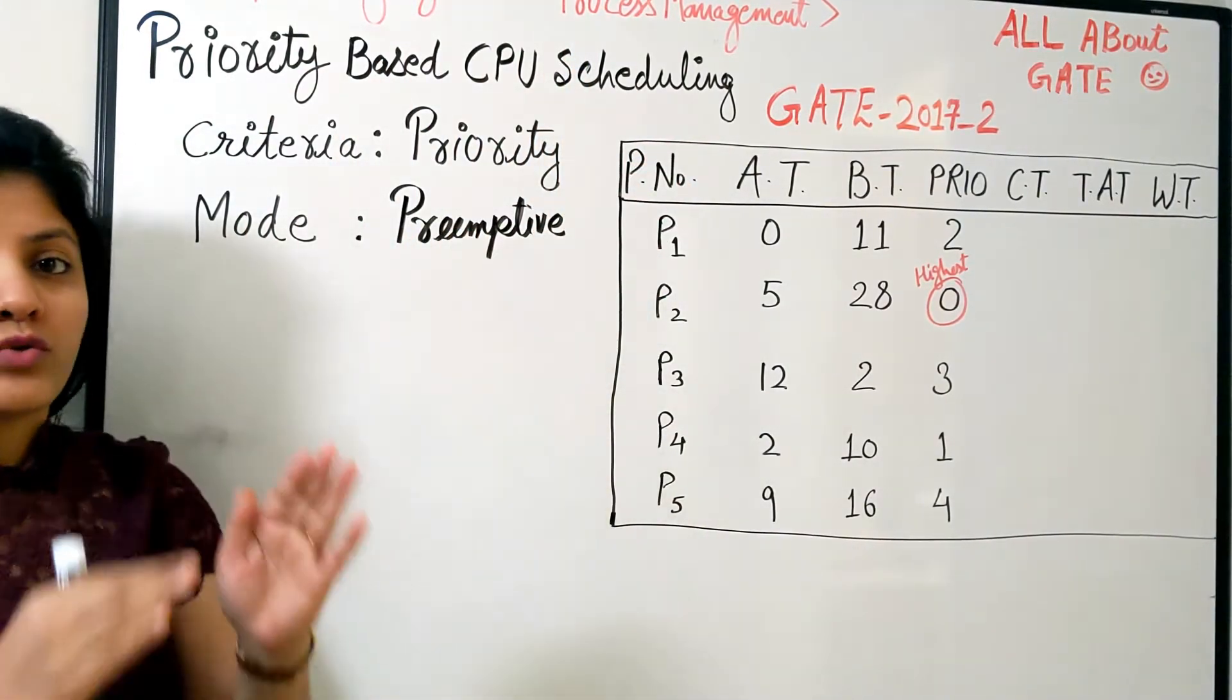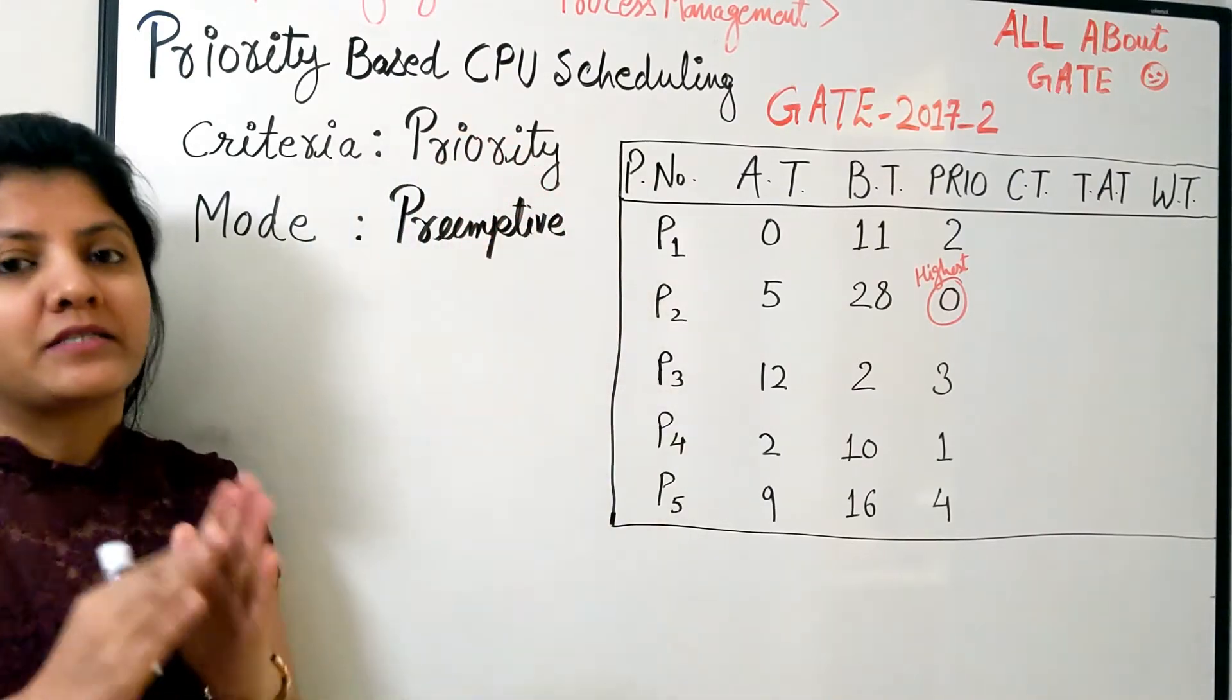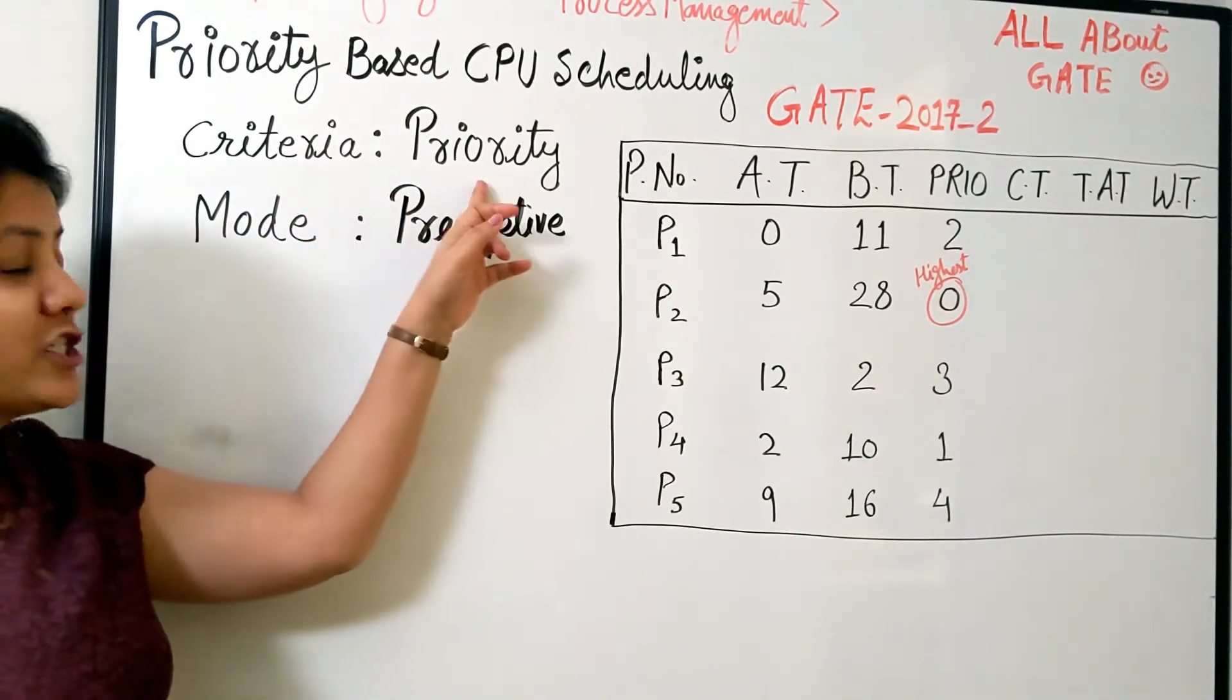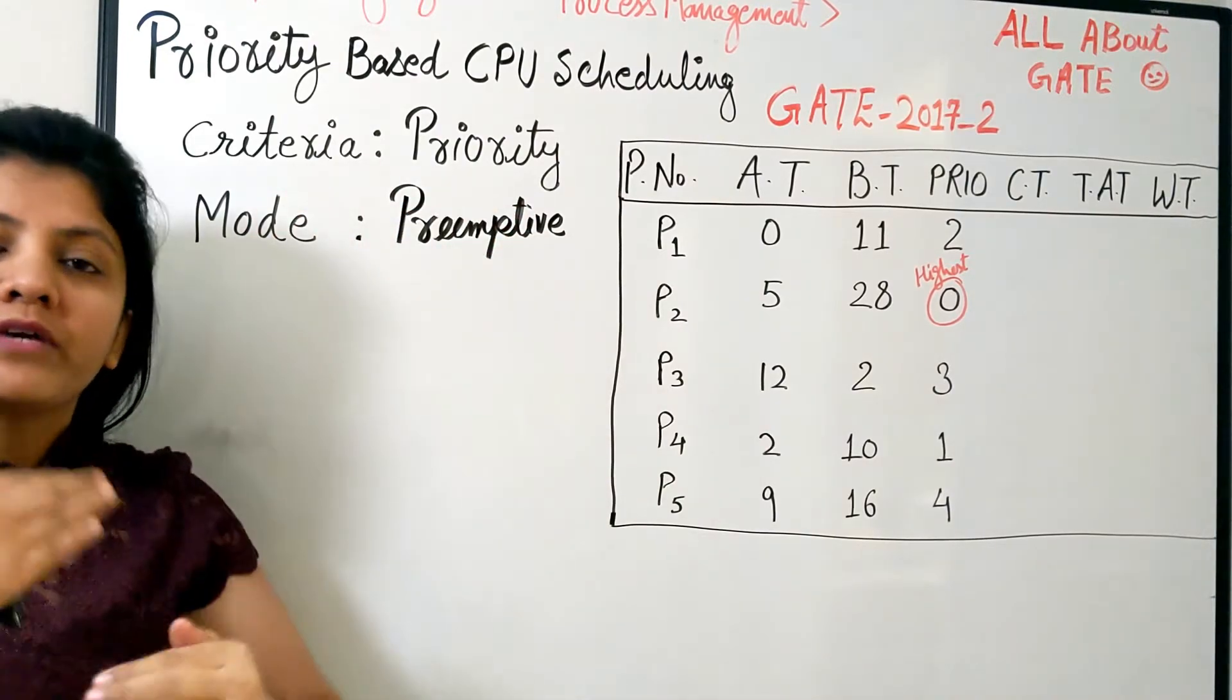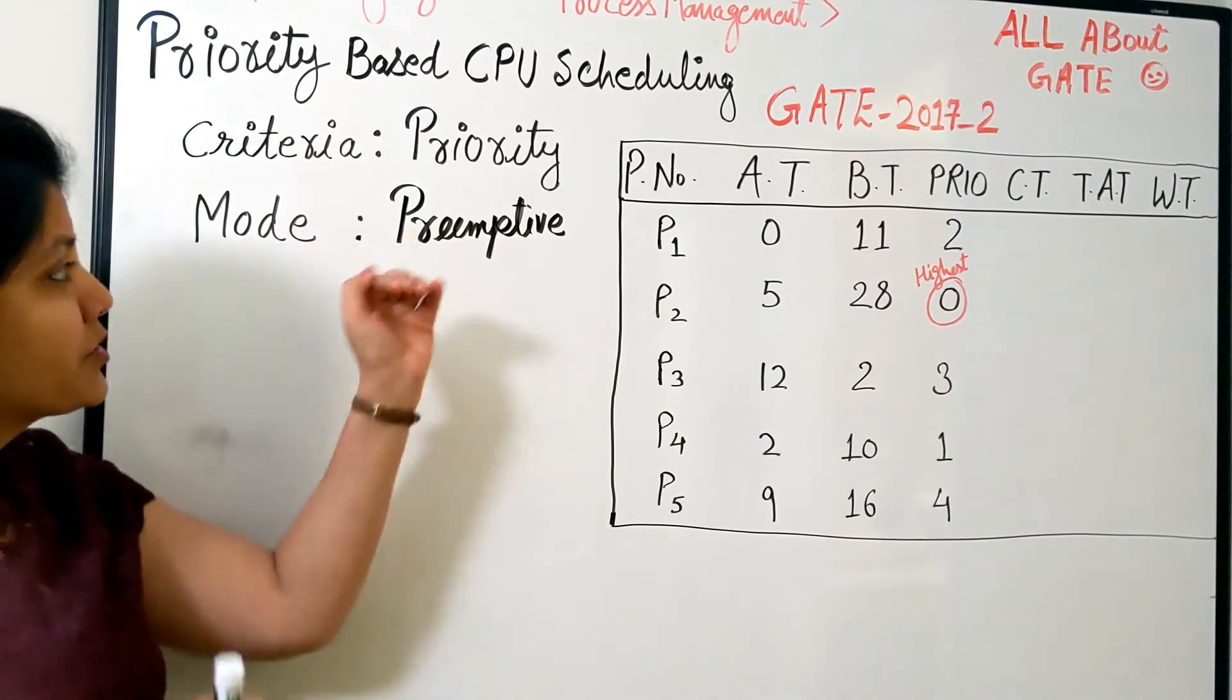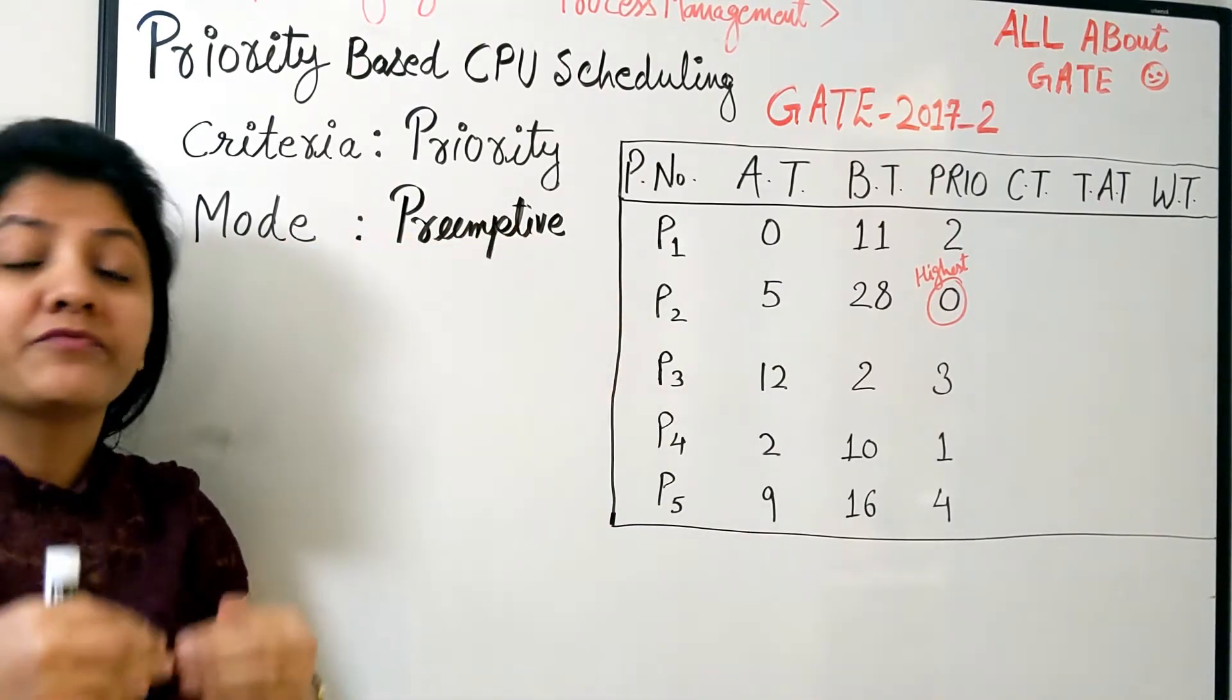The criteria is going to be the same as non-preemptive priority, which we understood in the previous video. The criteria is priority of the process, so whichever has the highest priority will be scheduled first. But the mode of execution is going to be preemptive.